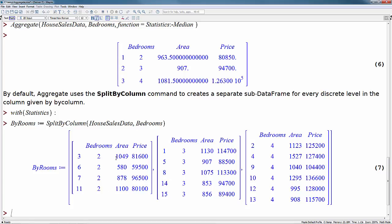So internally, this is what the aggregate command is looking at. It's looking at our data frame, which is now split into observations for two, three, and four bedrooms.